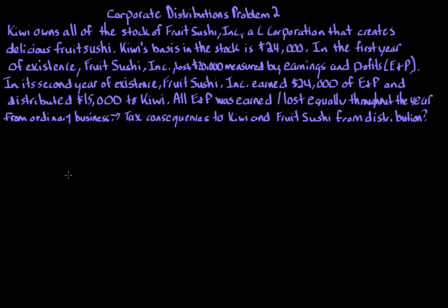Kiwi owns all the stock of Fruit Sushi Inc., a C corporation that creates delicious fruit sushi. Kiwi's basis in her stock is $24,000. In the first year of existence, Fruit Sushi Inc. lost $20,000, measured by earnings and profits, also known as E&P. In its second year of existence, Fruit Sushi Inc. earned $24,000 of E&P and distributed $15,000 of cash to Kiwi. All E&P was earned or lost equally throughout the year from ordinary business.